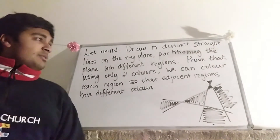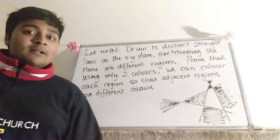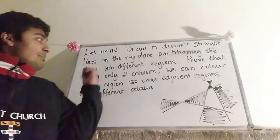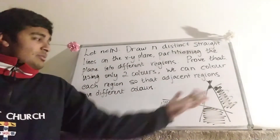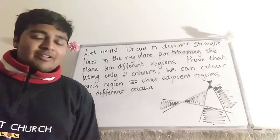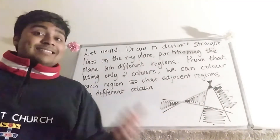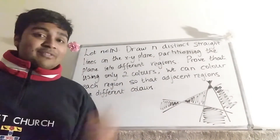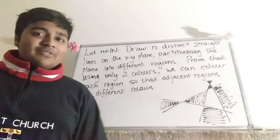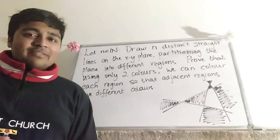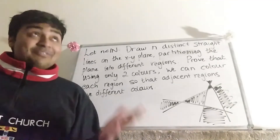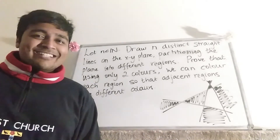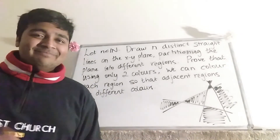This is a good example of the case n equals 4, but we want to prove that it holds for any natural number n, and also any configuration of the n distinct straight lines. If you want to have a go at this problem, pause the video now and give it a go, and I'm going to get stuck into a solution.